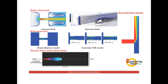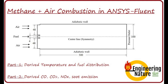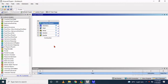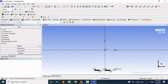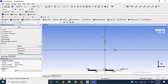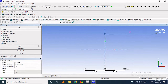Hello friends, welcome back to Engineering Nature. So far we had considered various types of problems involving various physics in this ANSYS Fluent tutorial series. Today I am incorporating the combustion model to understand combustion phenomena. We are going to consider methane combustion. For that, a simple geometry will be created with the help of the Design Modeler, part of ANSYS, using sketching and lines to construct a simple rectangle with a fuel inlet, air inlet, and wall.